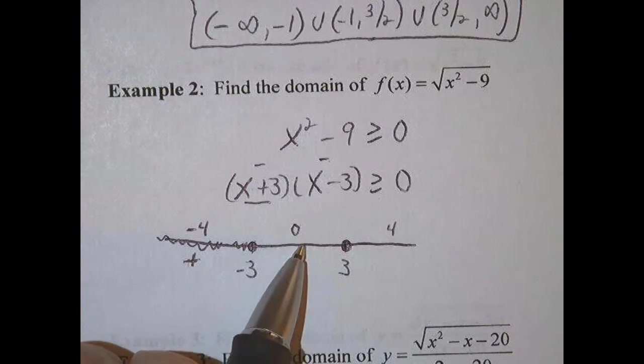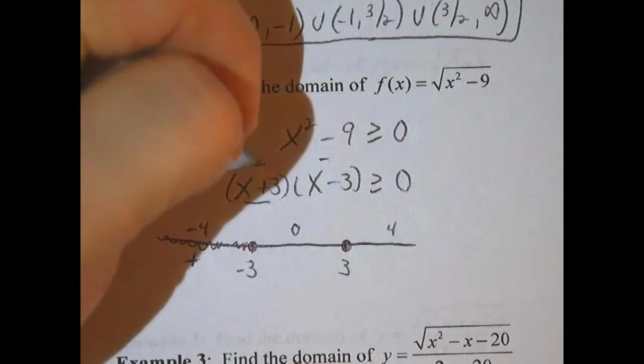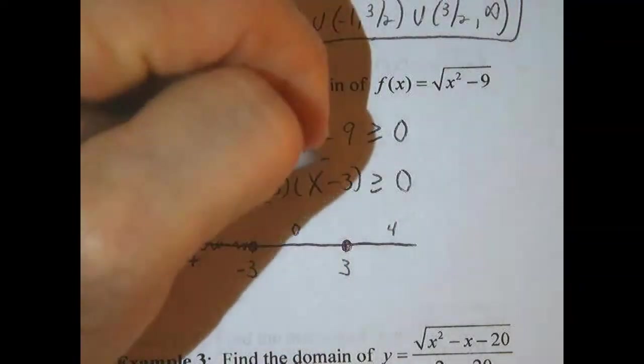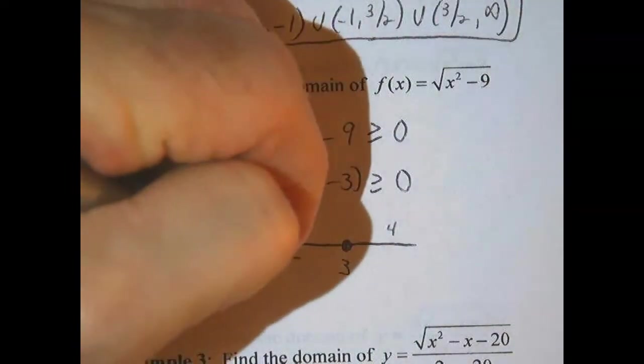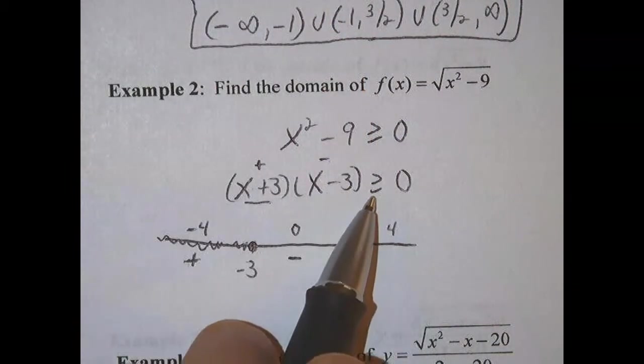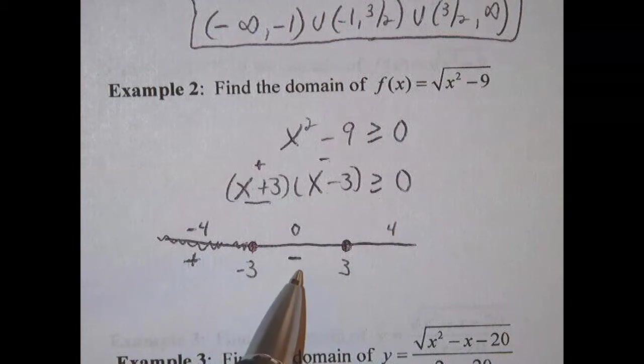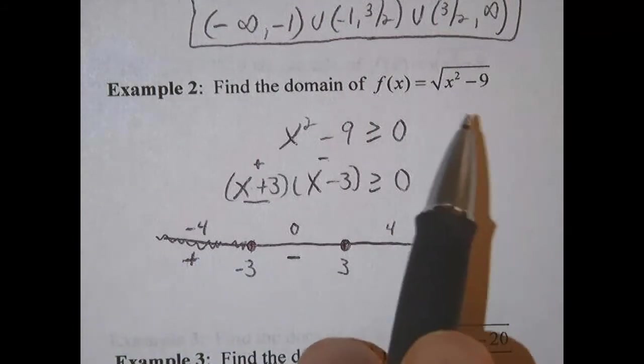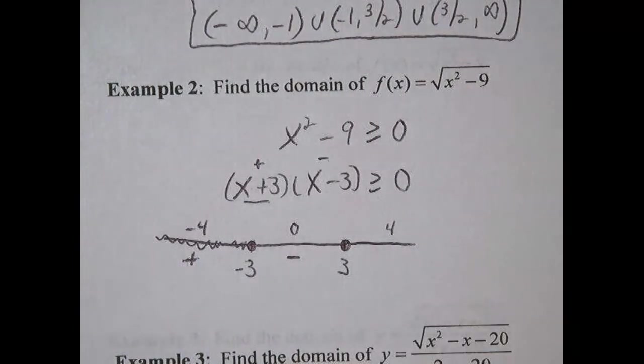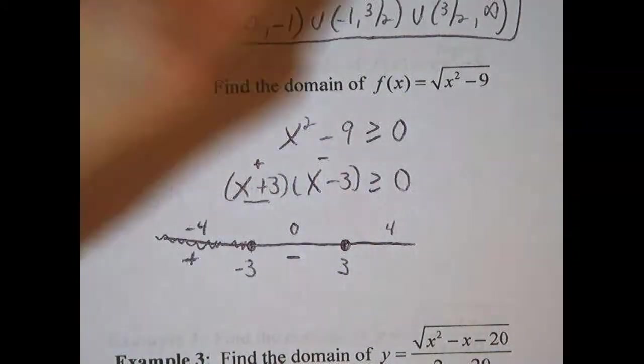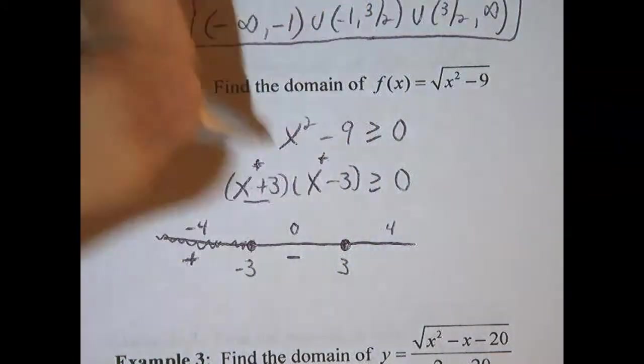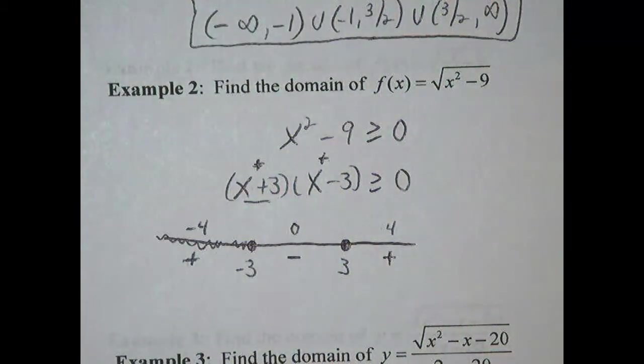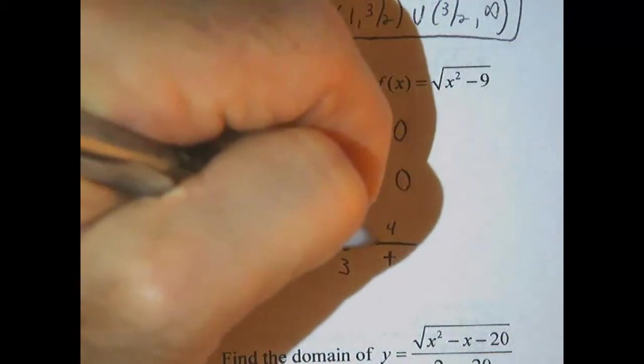That's greater than or equal to 0, so this will be part of the solution. When I pick 0, I get a positive and a negative. That's going to give me a negative. That will not be greater than equal to 0. That's not part of my solution set because it would represent a negative inside the radical. When I pick 4, I get a positive and a positive. Here I get a positive for both. So this will be a positive. So that will be part of the solution set.